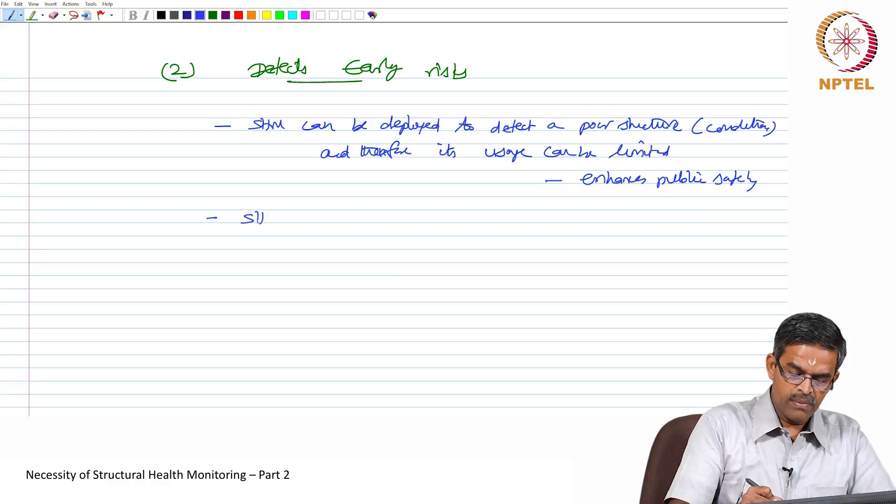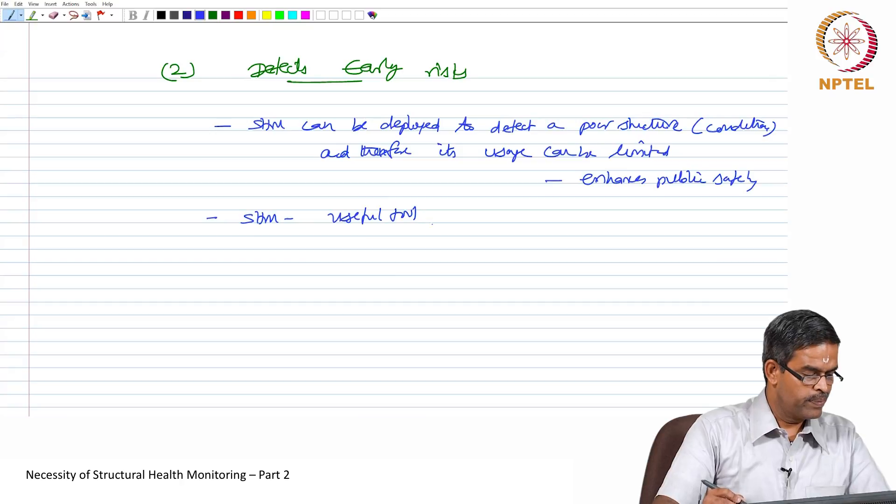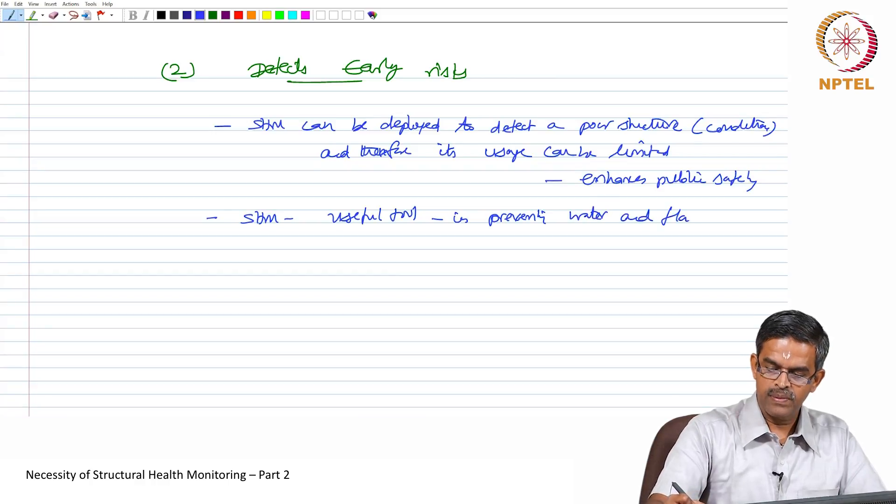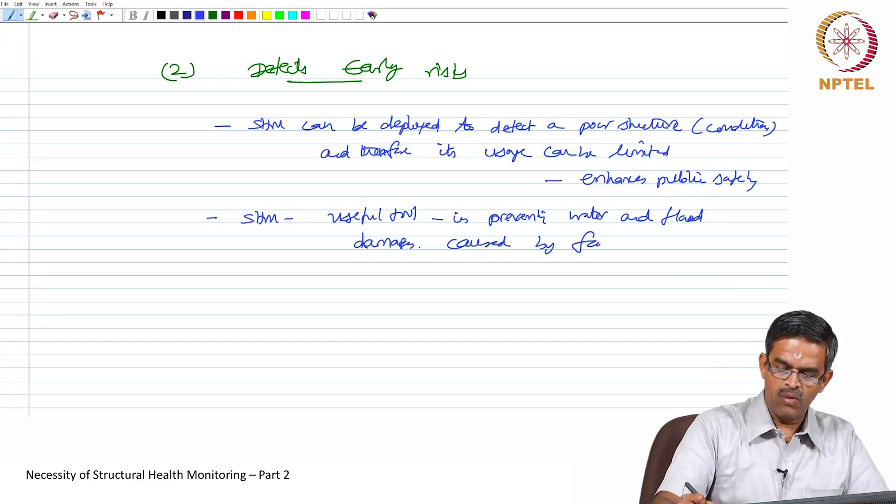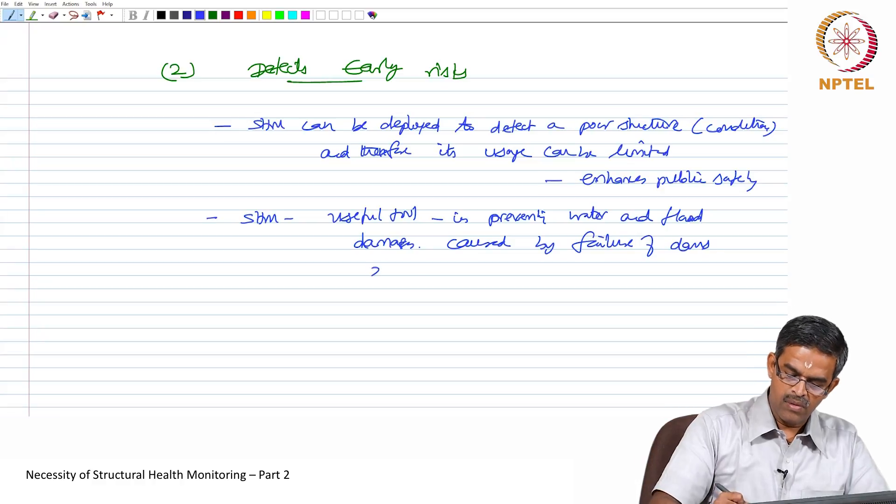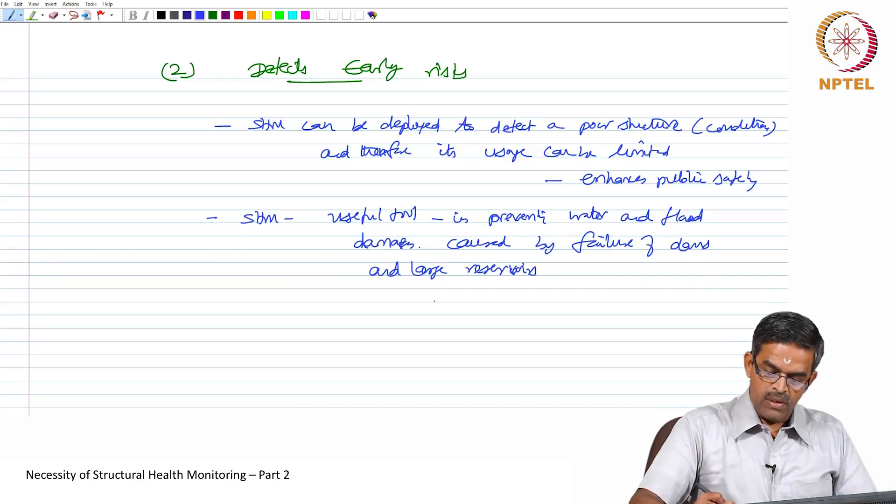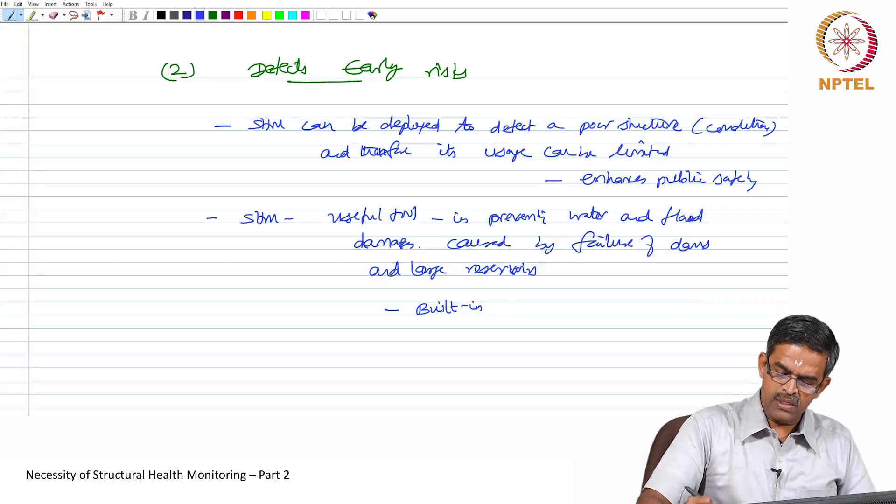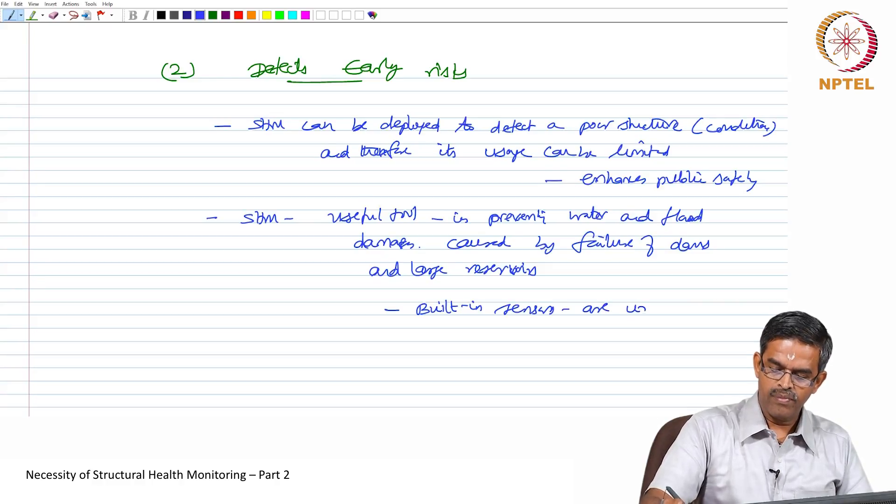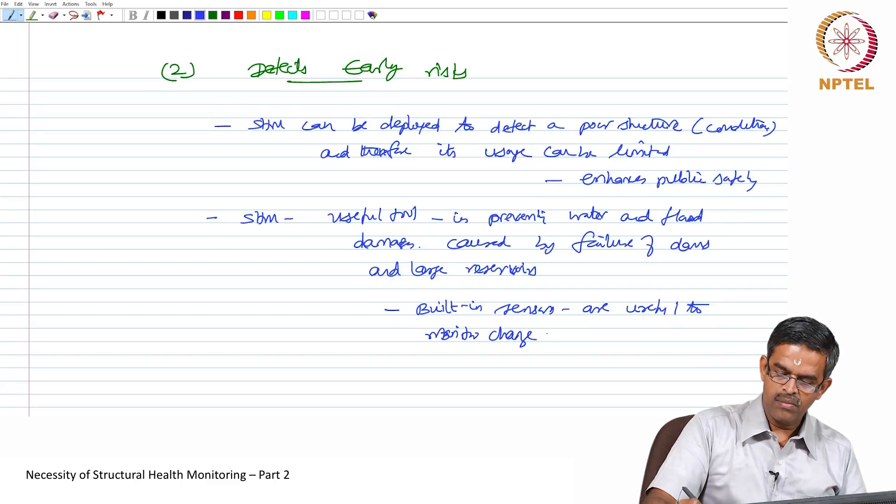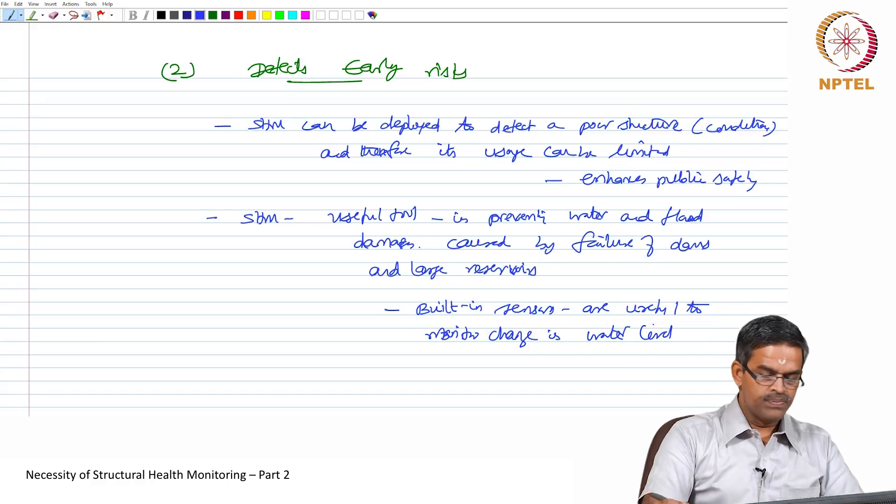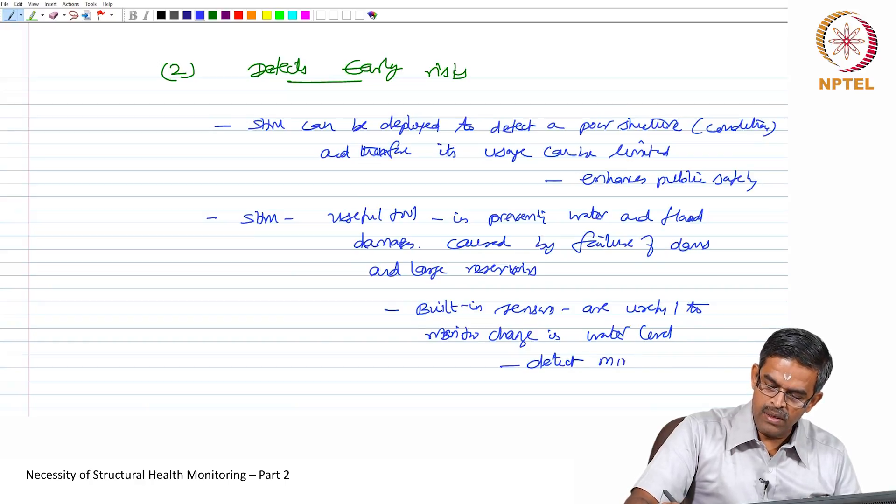Secondly, SHM can be seen as a highly useful tool in preventing water and flood damages. This is caused by failure of big reservoirs. In such cases, built-in sensors can be useful to monitor the change in water level, which can be used to detect minor leaks and major failures as well.